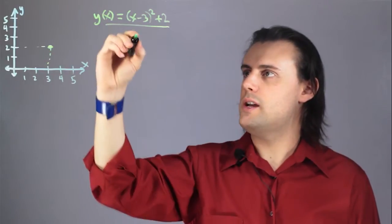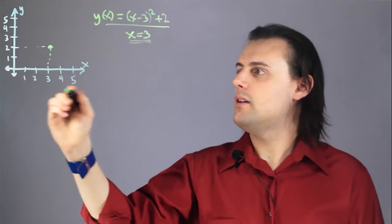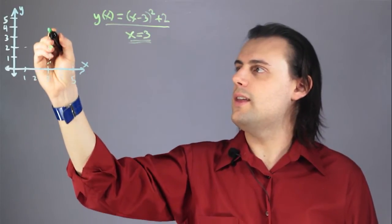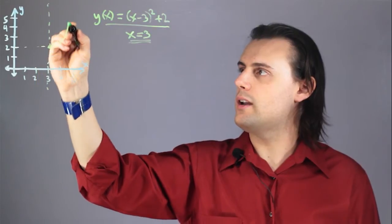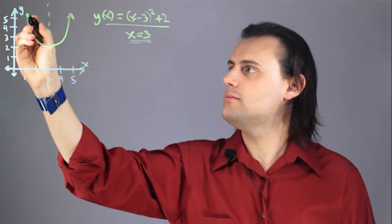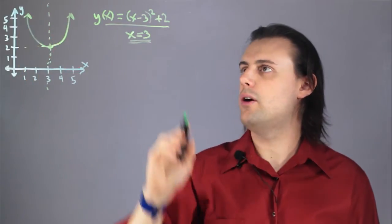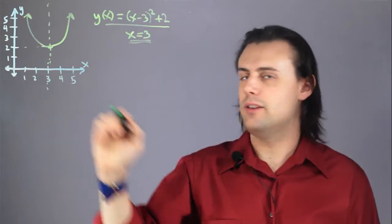The line of symmetry is x is equal to 3, because if I extend that line and then I plot this function, it's a quadratic equation here, a quadratic polynomial, and the function is symmetric about this line.